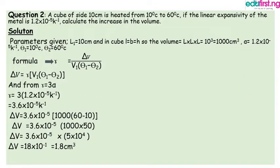Given the question: a cube of side 10 cm is heated from 10 degrees Celsius to 60 degrees Celsius. The linear expansivity of the metal is 1.2 times 10 to the power minus 5 per Kelvin. Calculate the increase in volume. First, we write out the given parameters. L1 equals 10 cm. In a cube, length equals breadth equals height, so the volume equals length cubed, which is 10 cubed.